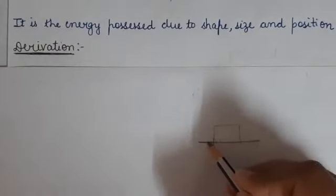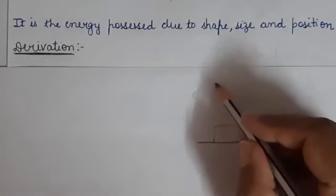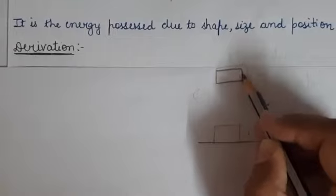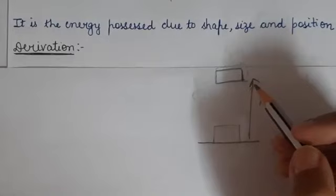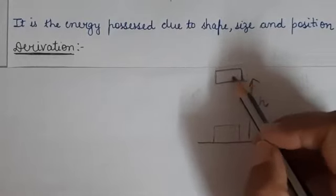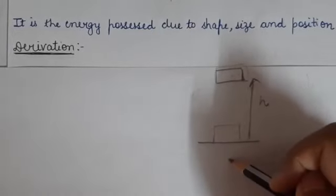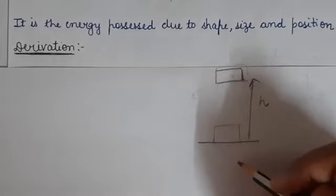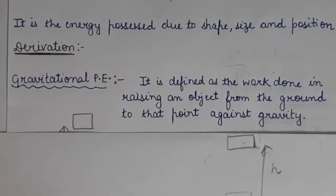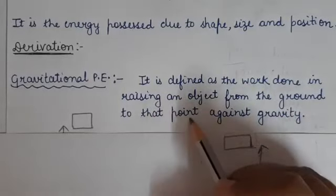Before starting the derivation, let us take an example. This is the level of the ground. An object is placed on this ground. Now you are raising this object up to a certain height h. When it is raised, the object is at height h. On raising the object through a certain height, the object increases its energy because work is done on it — force was applied and displacement takes place. So, work is done on the object against gravity.